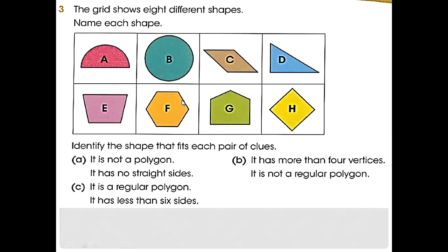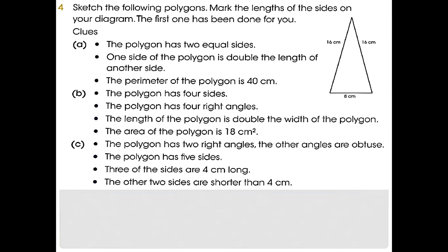Now question number four: sketch the following polygons. Mark the length of the sides on your diagram. The first one has been done for you as a clue. Now here they just drew a polygon that has two equal sides.